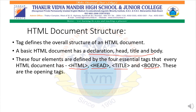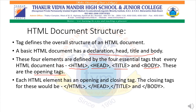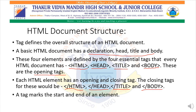These are called opening tags. Each HTML element has an opening and closing tag. The closing tags are: angle bracket slash HTML, angle bracket slash head, angle bracket slash title, and angle bracket slash body. Each tag marks the start and end of the element.